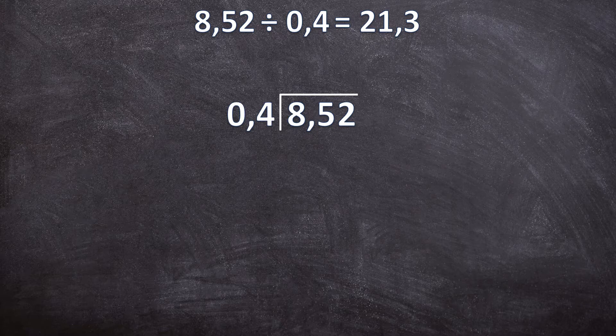When we divide a decimal number by a decimal number there is one extra step. We don't want to divide by a decimal number — we're okay if the dividend is a decimal, but we want the divisor to be a whole number. So I'm going to multiply by 10, moving the comma one place to the right.